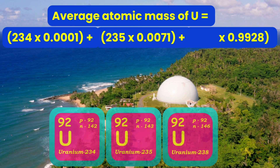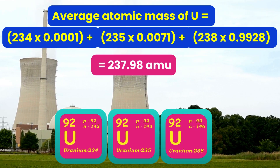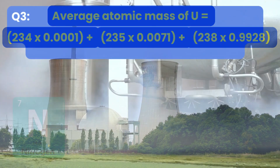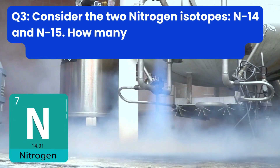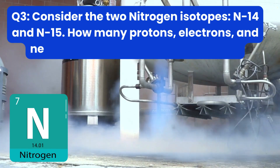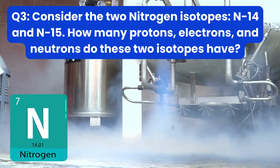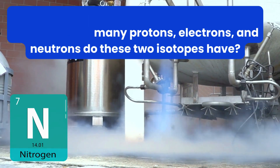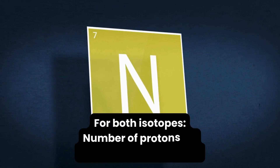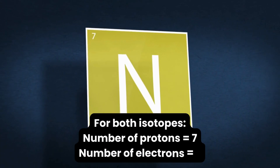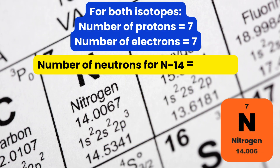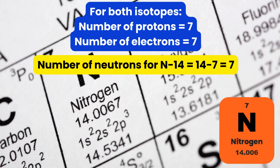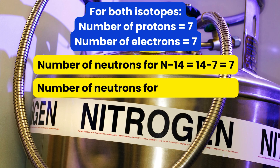Question 3: Consider the two nitrogen isotopes N-14 and N-15. How many protons, electrons and neutrons do these two isotopes have? Both isotopes have seven protons and seven electrons because the atomic number for nitrogen is 7. The number of neutrons for N-14 is 14 minus 7 equals 7, and the number of neutrons for N-15 is 15 minus 7, which equals 8.